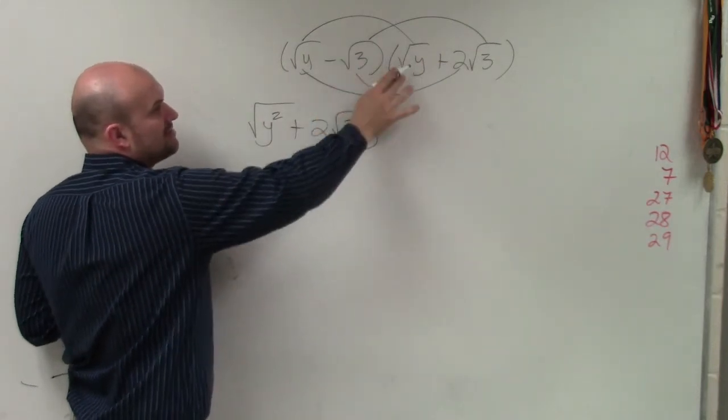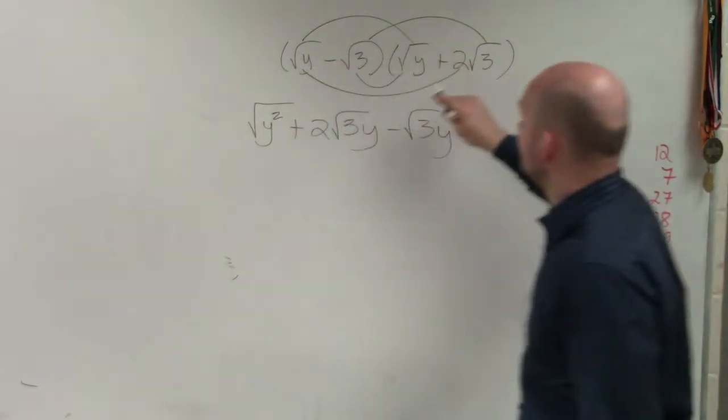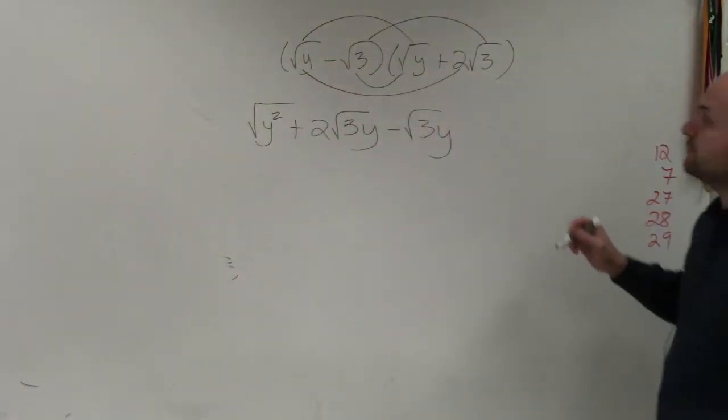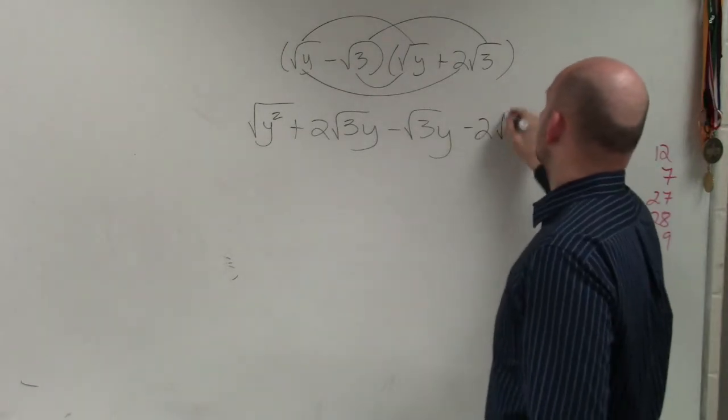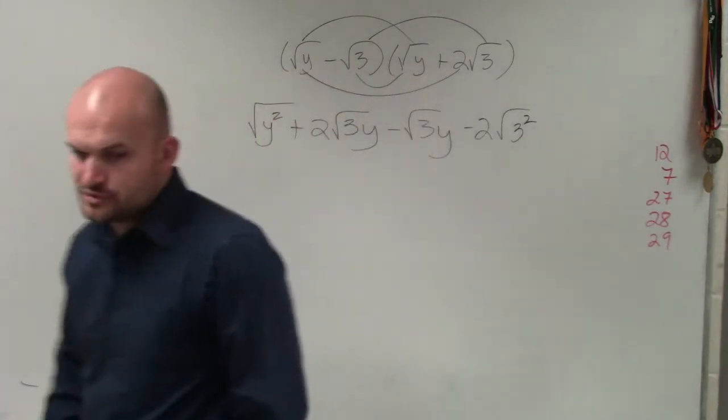Negative square root of 3 times square root of y becomes a negative square root of 3y. And then the negative square root of 3 times 2 square root of 3 becomes a negative 2 square root of 3 squared, which is 9, but we'll just leave it as 3 squared.